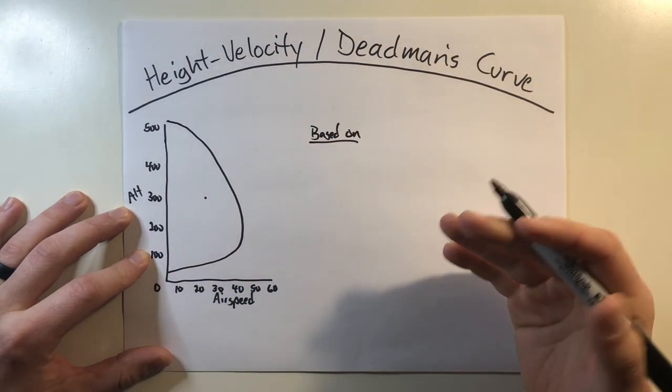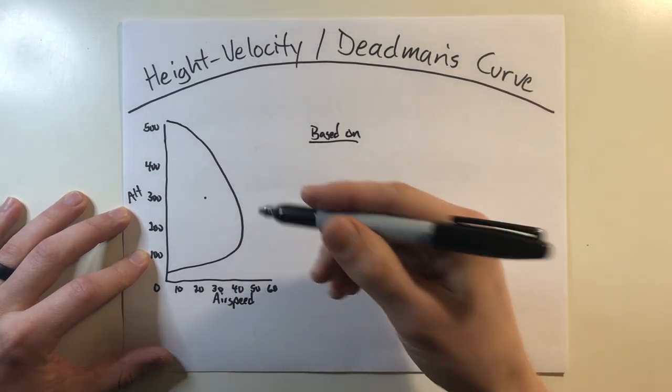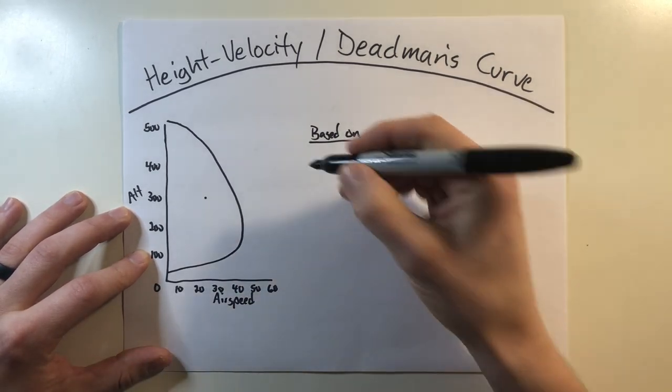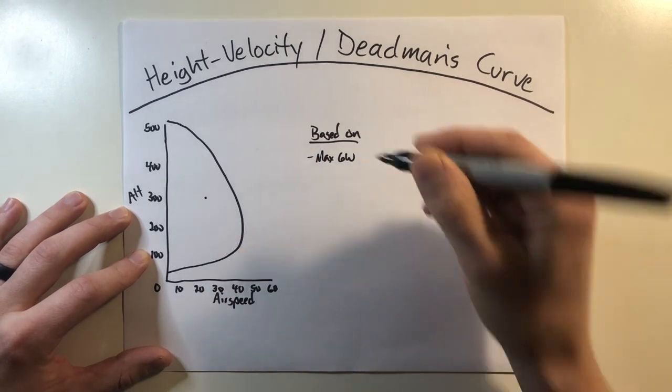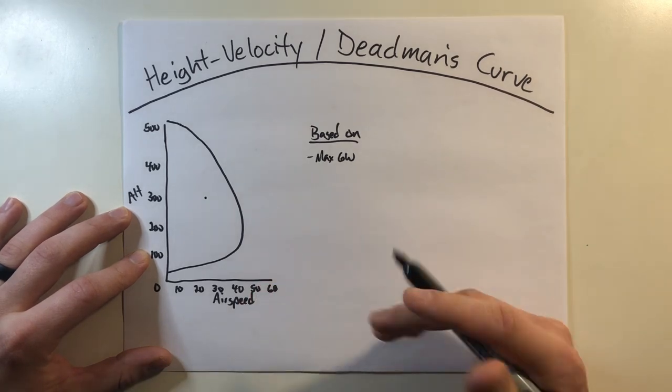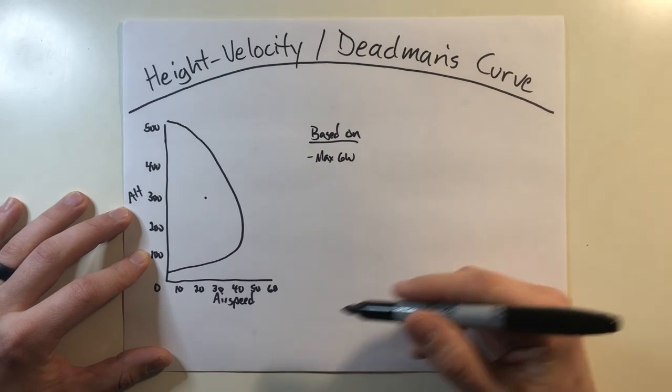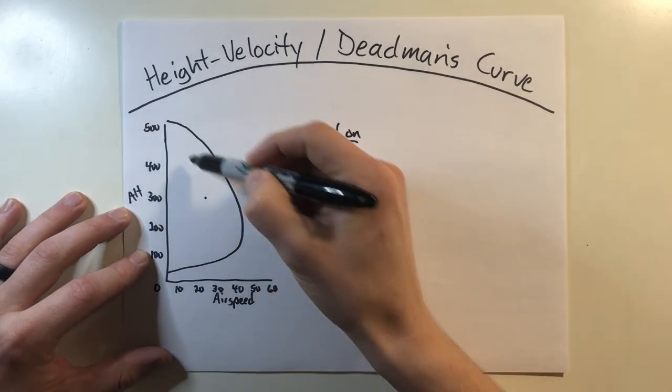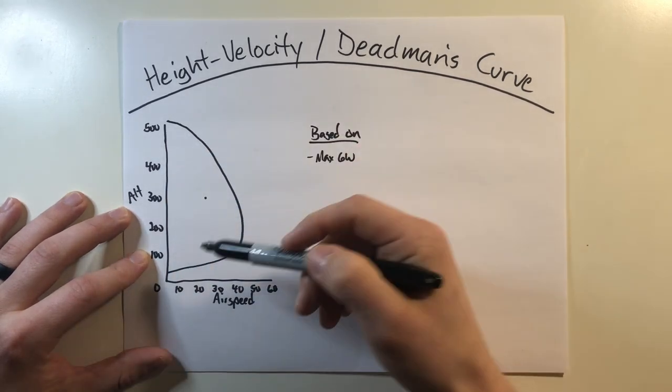Now, every helicopter's operator's manual is going to have this in there, and it has to be certified under the helicopter's maximum gross weight. Now why is that? Well, this is supposed to be the worst case scenario depicted in the event that you're operating at the helicopter's maximum operating weight. Anything less than that, this curve would be slightly shrunken down a little bit more to the left, not as big of a curve.